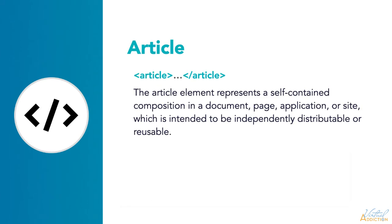The article is similar to a section in that it should enclose a chunk of related content. However, the content inside an article should also be self-contained and independent. The article HTML element represents a self-contained composition in a document, page, application, or site, which is intended to be independently distributable or reusable. Think syndications.